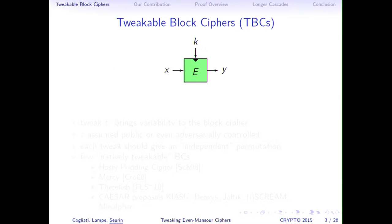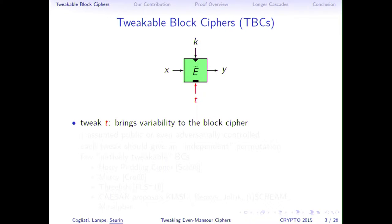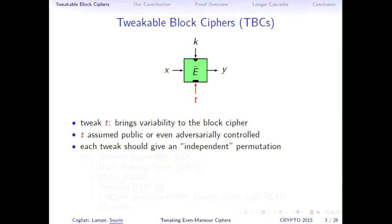A classical block cipher takes as input a key K and a plaintext X and computes a ciphertext Y. A tweakable block cipher takes an additional input called the tweak T, which brings variability to the block cipher, in the same way as an IV brings variability to an encryption mode. As with an IV, the tweak T in the security model is assumed to be public or even controlled by the adversary. From a security point of view, each tweak should give an independent permutation.